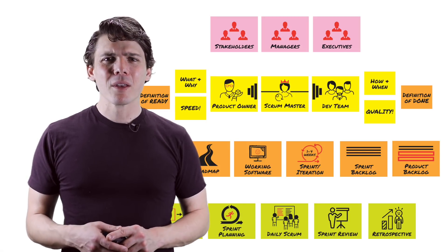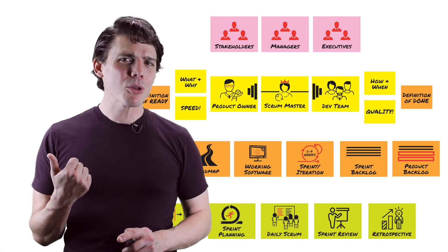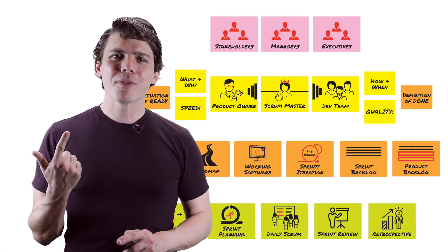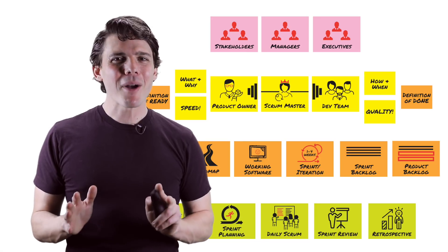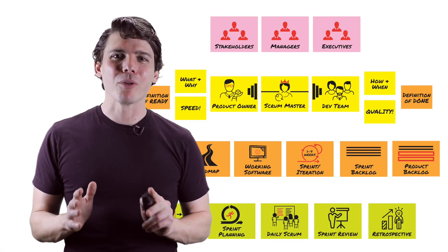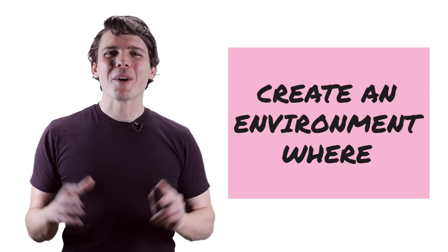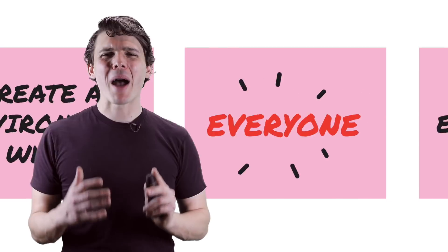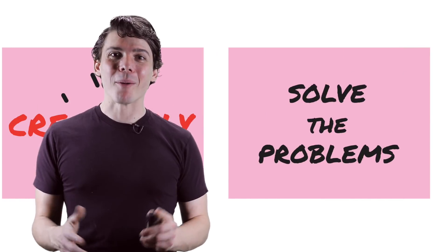So we talked about the fundamental roles, artifacts, and events that you'll find in an organization that's practicing Scrum well. What's the end result? Let's suppose we create the right culture, build an effective organizational structure, and let teams define the processes and tools that work best for them. After practicing textbook Scrum long enough to fully internalize it, what do we get? We create an environment where everyone feels empowered to creatively solve the problems.